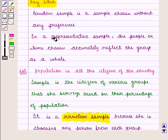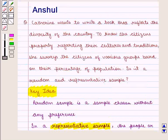We also know that in a representative sample, the people or items chosen accurately reflect the group as a whole. Since there is diversity in the country, there are people belonging to different cultures and traditions. She divided the people in groups and then chose people from each group according to their percentage of population in the country.